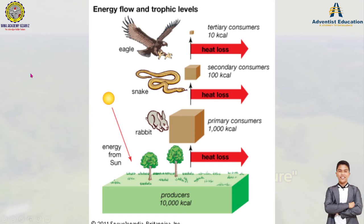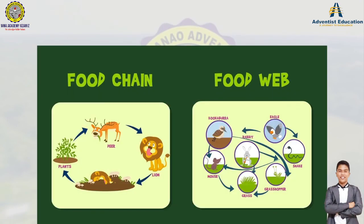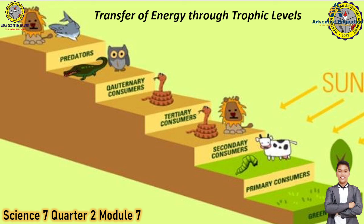I hope you have learned why God wants us to eat vegetables and not fast food or junk foods — because God wants the energy to come directly from the producers. Remember: the first trophic level is the producer, the second is the primary consumers, the third is the secondary consumers, the fourth is the tertiary, the fifth is the quaternary. The higher the trophic level, the lesser the energy we receive. Please check the description for links to the other videos. God bless in answering your module — keep safe, everybody, bye bye!